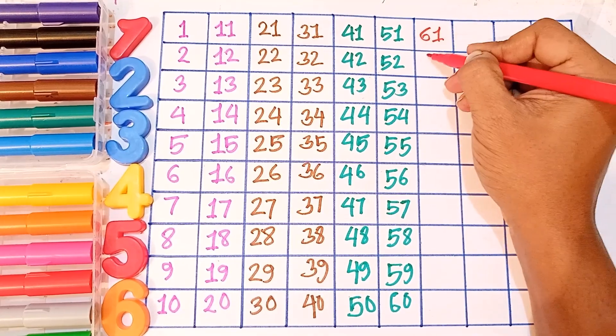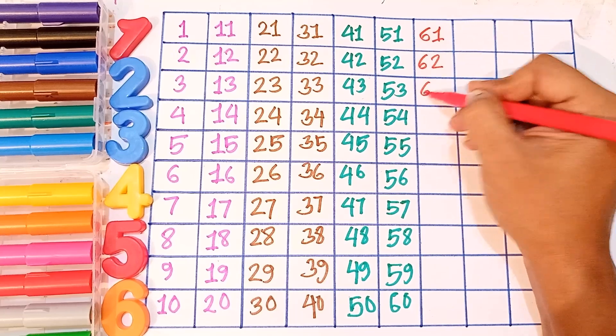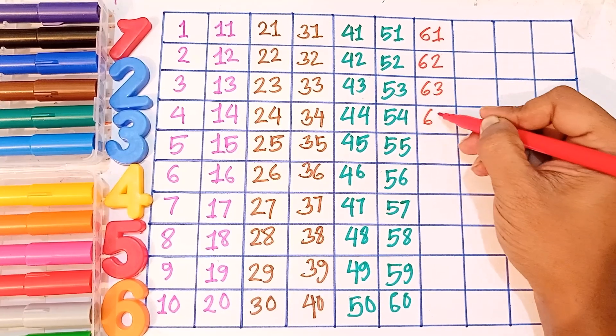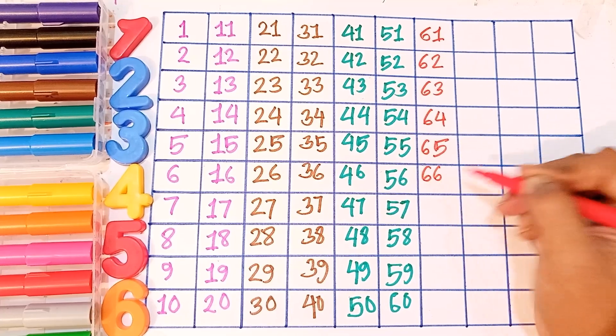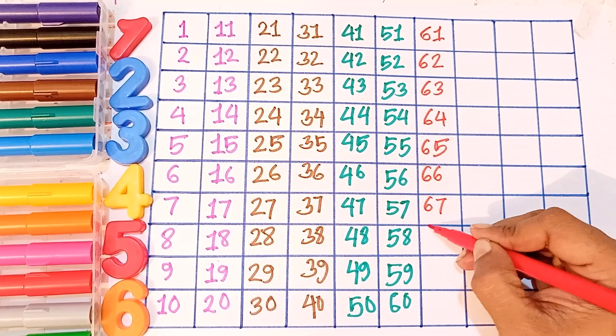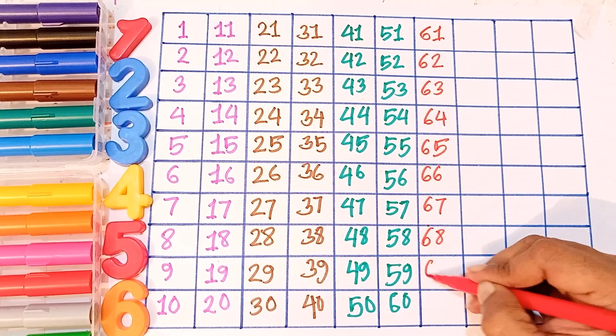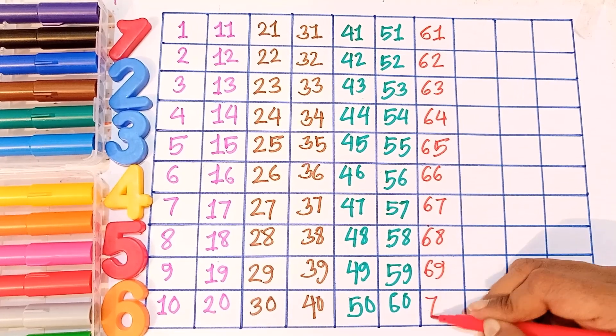Sixty-one, sixty-two, sixty-three, sixty-four, sixty-five, sixty-six, sixty-seven, sixty-eight, sixty-nine, seventy.